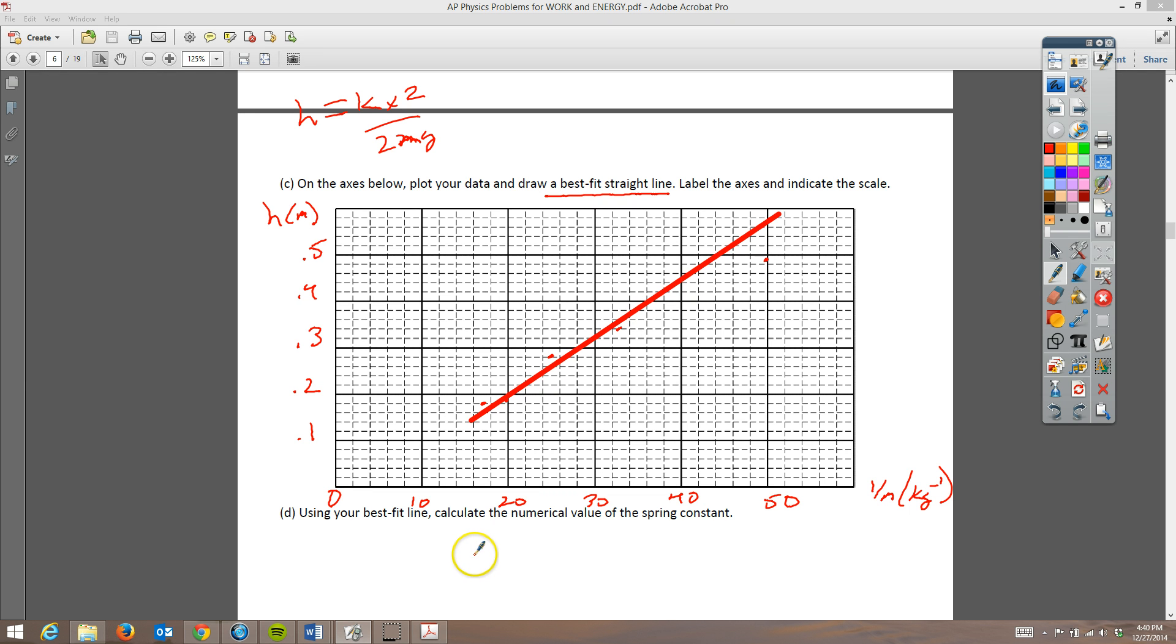So now we actually have earned four points for this. We've correctly labeled both axes, so that was one. We have a scale that's appropriate. There's another point. We've got our dots. That's a point. And we have our best fit line, and that is our last point for that.